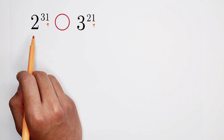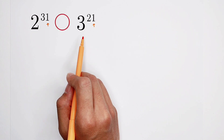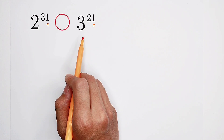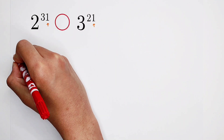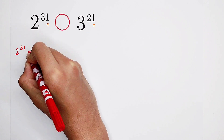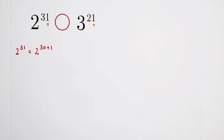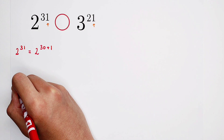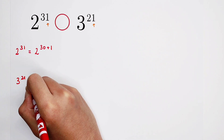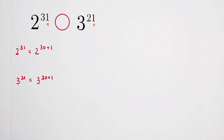I'm going to transform 2 to the power of 31 as 2 to the power of 30 plus 1, and 3 to the power of 21 as 3 to the power of 20 plus 1. The transformation is done.